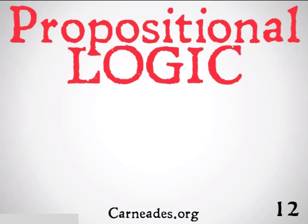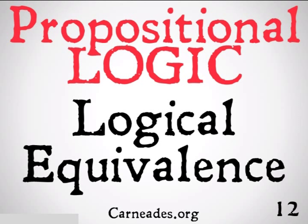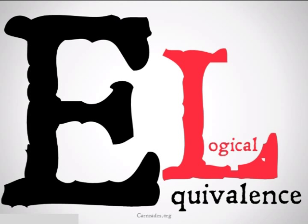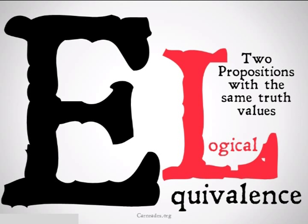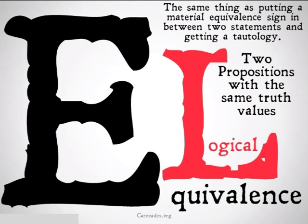The first we're going to be looking at is called logical equivalence. Logical equivalence is a lot like material equivalence, that triple bar we learned about earlier. It is going to be the case when you have two propositions that have the same truth value. Basically, it's the same thing as putting a material equivalent sign in between two statements and getting a tautology — getting all trues going down in the column.